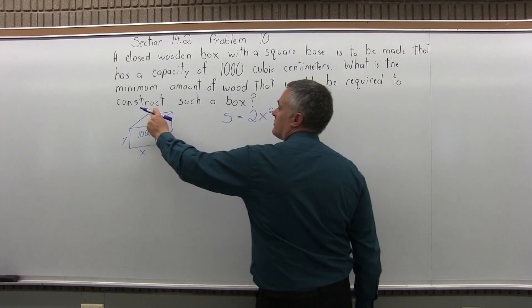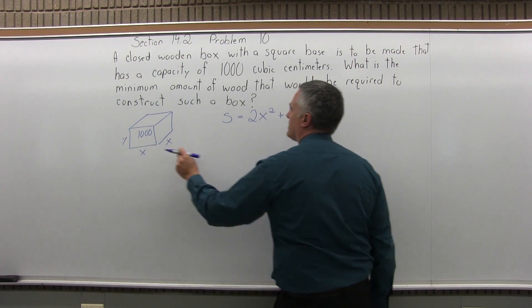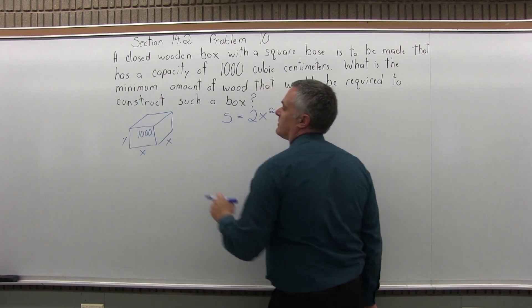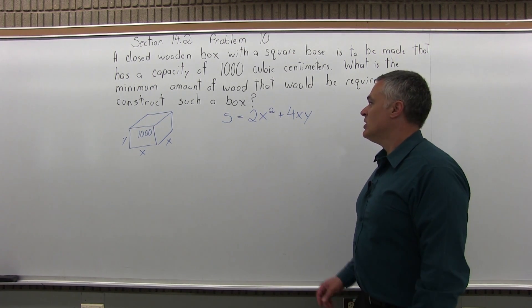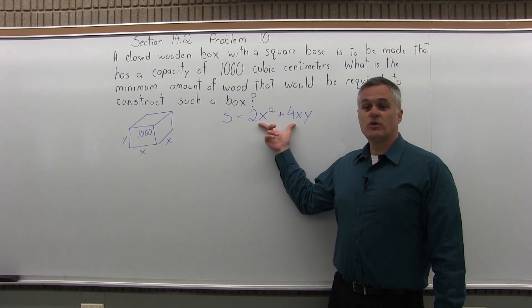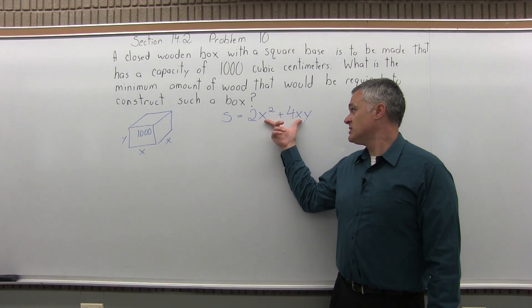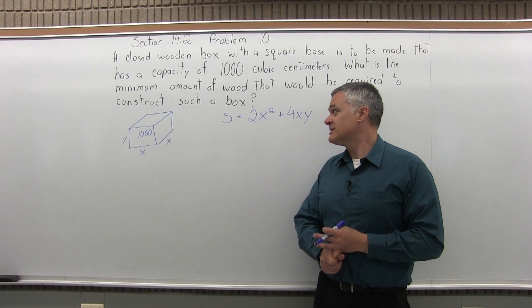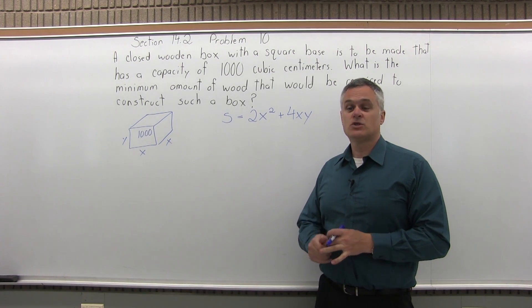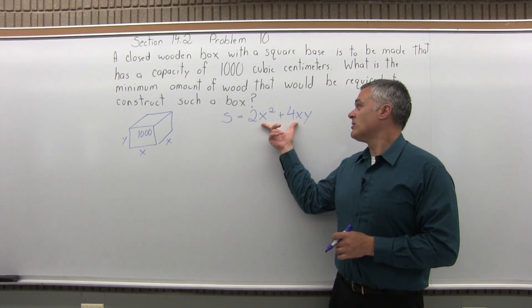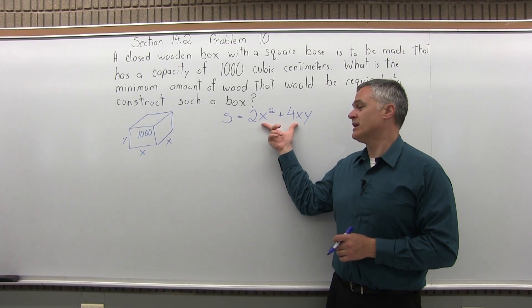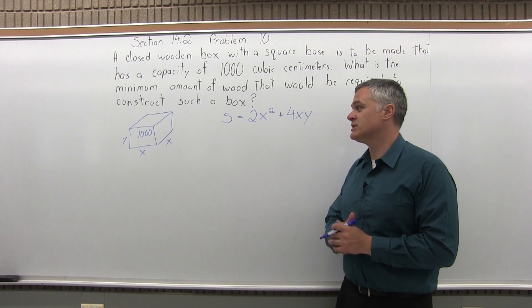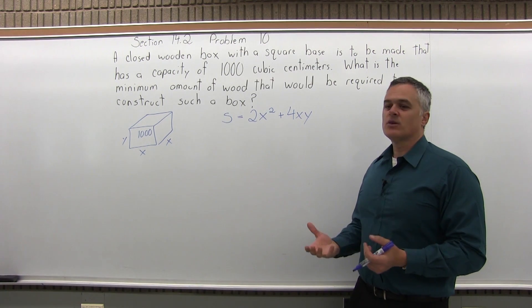So again, the 2x squared comes from the surface of the top and bottom of the box. And the 4xy are the four sides of the box, front, back, left, right side. So this is our function that measures how much wood we have to use based on the dimensions of the box. So again, we're going to want to take the derivative of S, set it equal to 0, solve for our variable. The problem being though, two variables. We have to write it in terms of one variable, either all x or all y. We can't have two variables. So how are we going to get it down to one variable?